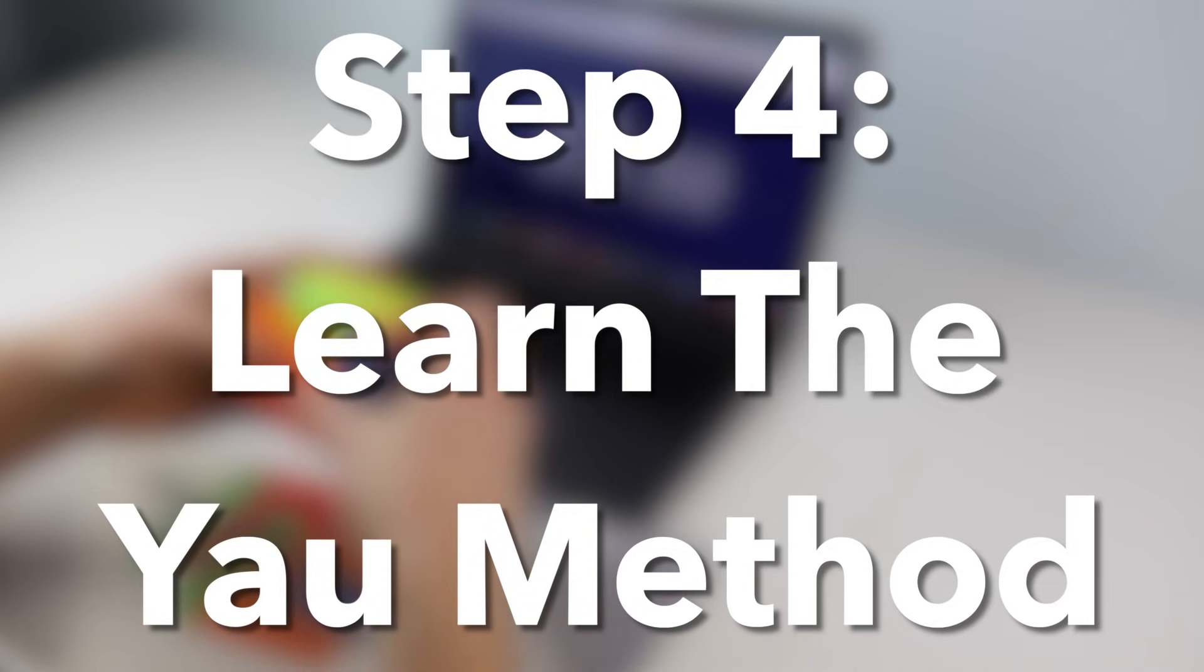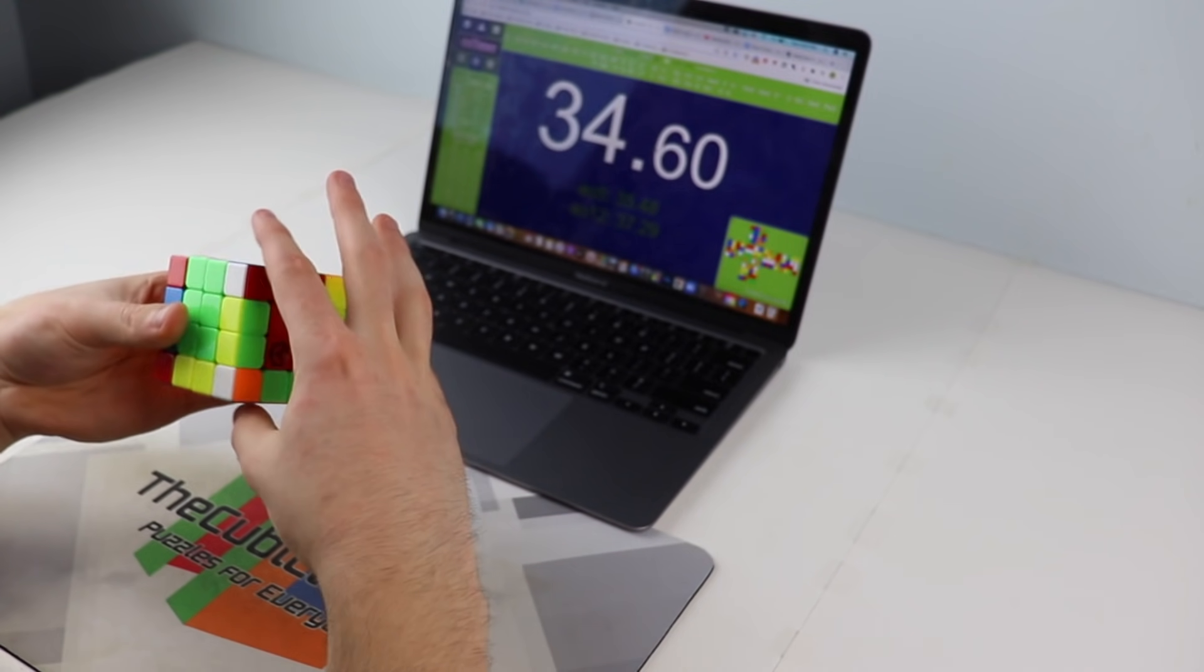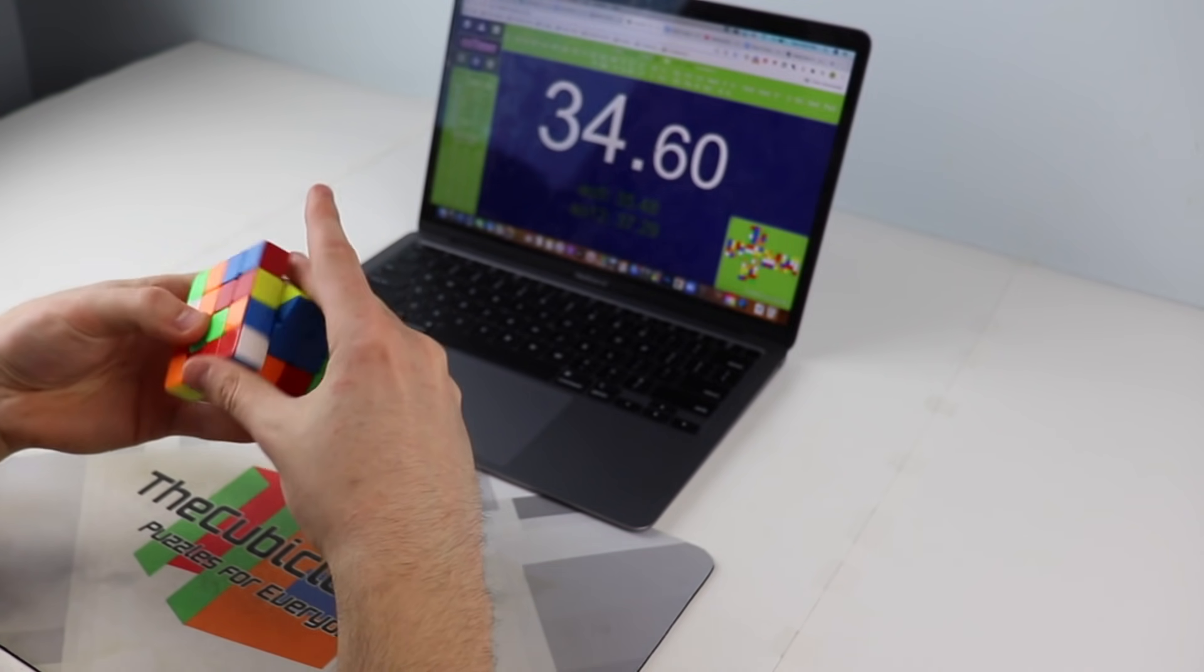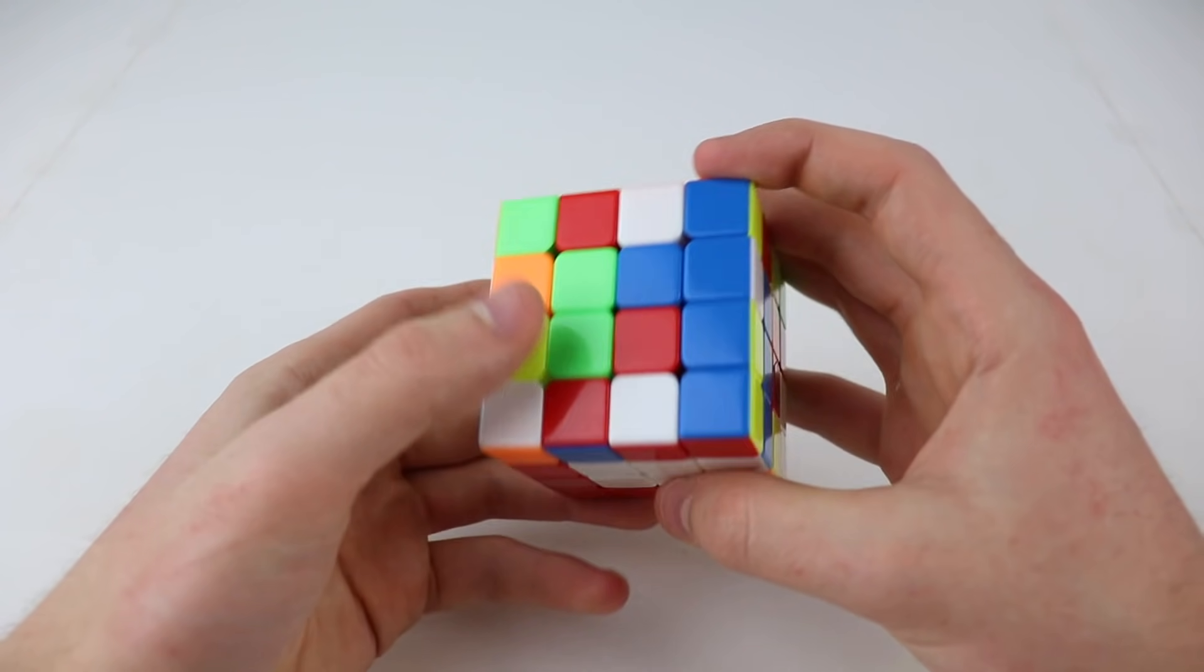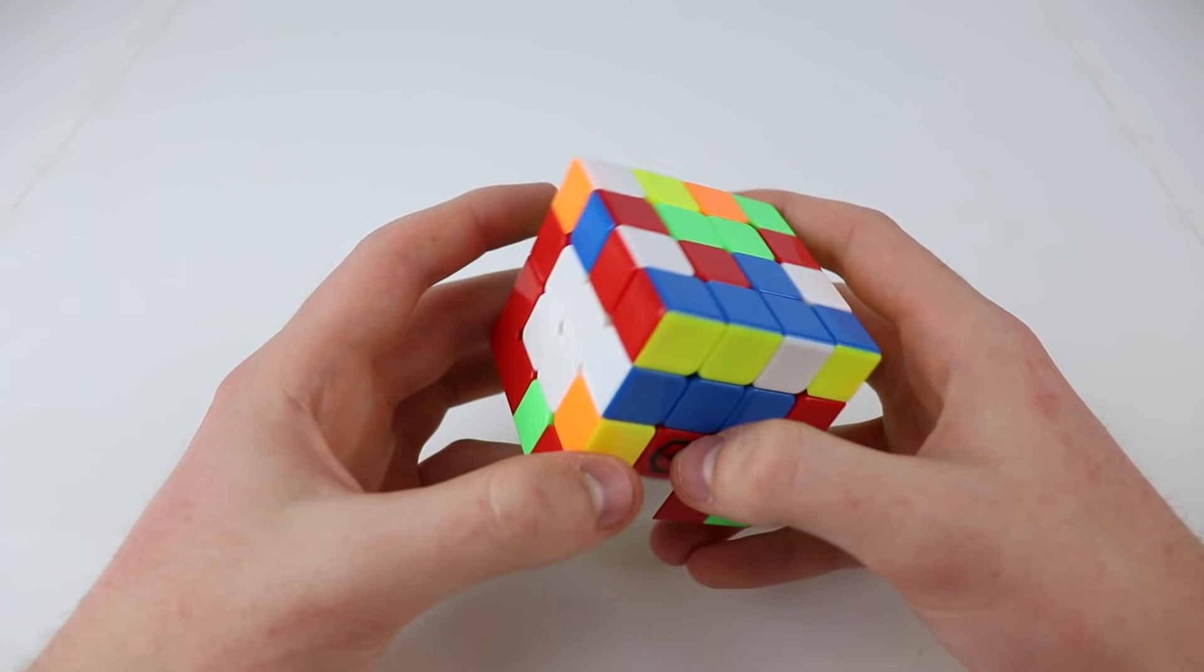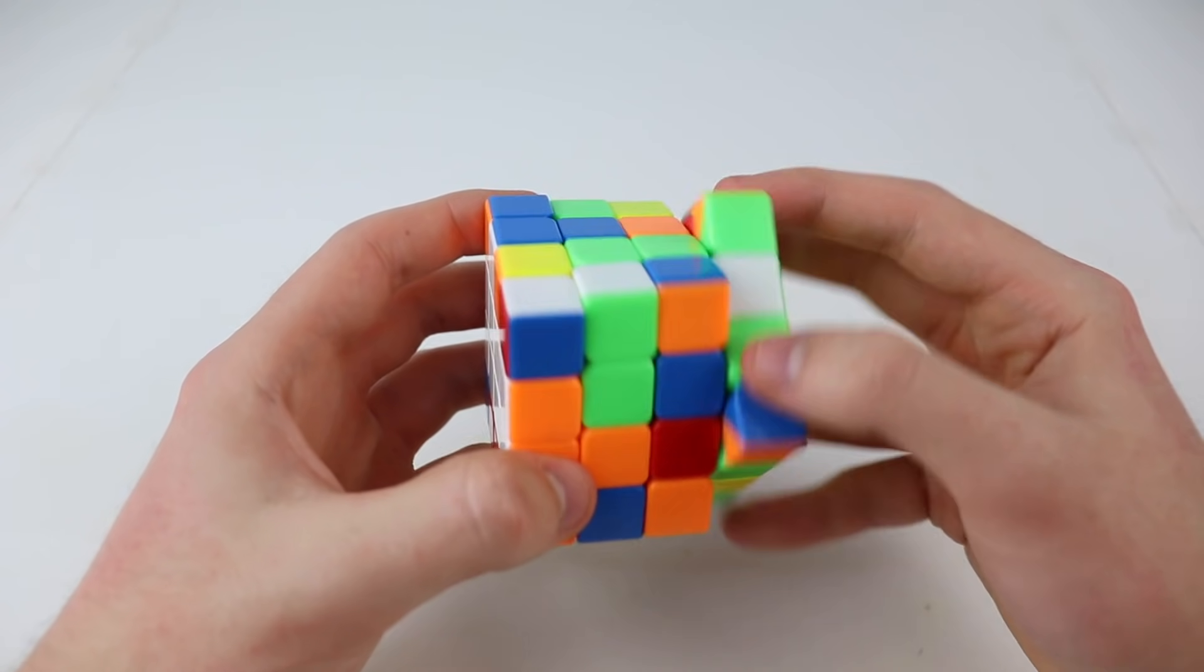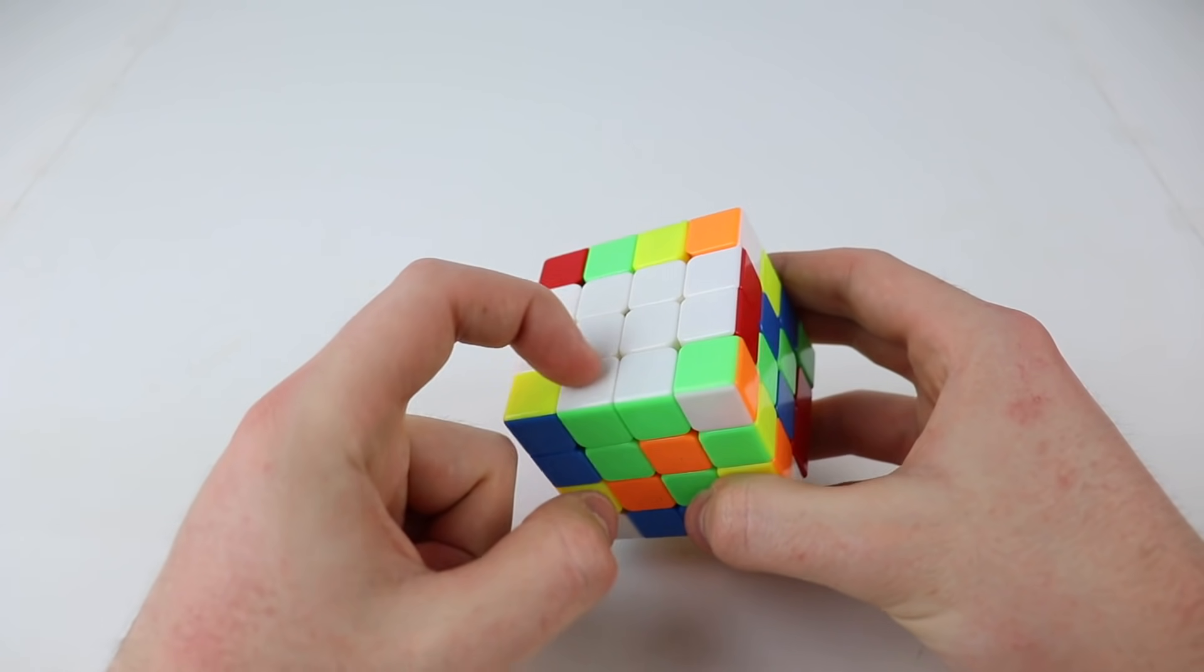Step 4 is super important, and it's to learn the Yao method. Yao is the method that all of the top 4x4 solvers use, and you'll see why when we go over the steps. First, you build two centers. The one that you will solve cross on during the 3x3 stage, and the one that goes directly across from it. Then, you turn the cube on its side, and build three of the edges on your cross color. This serves two purposes, which we'll get to soon. Once you have those edges done,